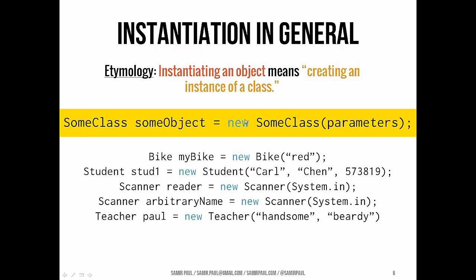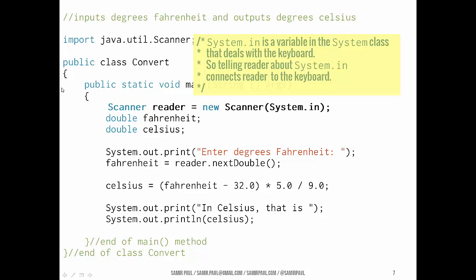So these are all examples of instantiating objects. They generally follow this format. Well, hey, make me a new whatever the class name is and whatever parameters it takes. So whatever characteristics you're giving that object. Now, whoever writes the class, whoever writes the definition of that type of thing, whether it's a Bike or a Student or a Scanner or a Teacher or whatever, whoever writes that definition gets to decide what types of parameters it takes, whether it takes a color or a name or a string or a number or a temperature or adjectives or whatever else. Saying, hey, give me a new example of that object, new instance of that object. And I want to make a variable that points to that so that I know how I can refer to that object I just made. And this is the name I'm going to refer to it by. So again, system.in deals with the keyboard, and that's really what its main use is.